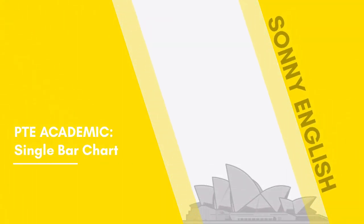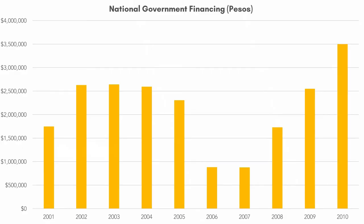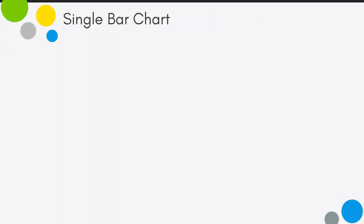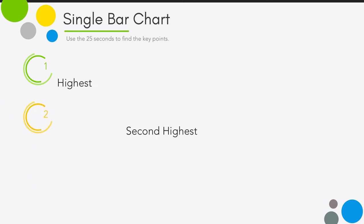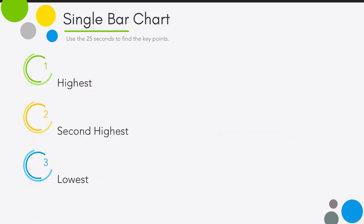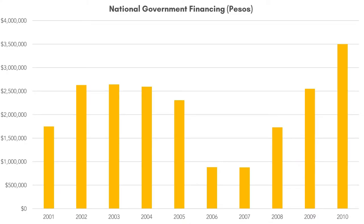This video will cover the single bar chart template. By now you should have the templates downloaded and printed out, so let's go over them together. This is what a single bar chart looks like — there's usually a title above, and the single bar chart will contain data on the X and Y axes. During the 25 seconds, you should identify these three points: the highest, the second highest, and the lowest. Take a look and pick out those points.